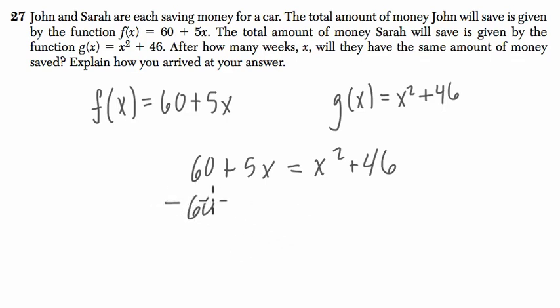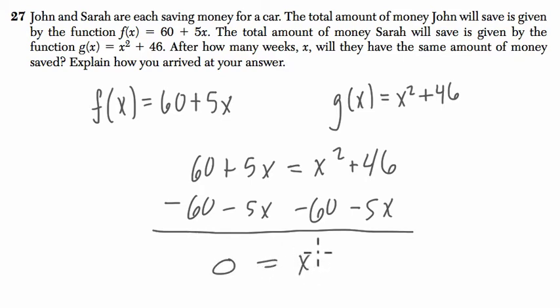I'm going to get 0 on one side by subtracting 60 and 5x. This will help me solve for x squared. I generally try to get 0 on one side of the equation when I'm solving for x squared.